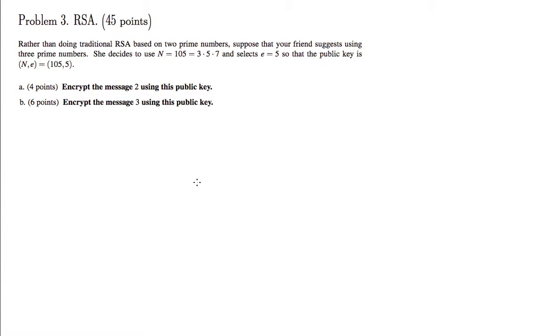The problem 3 parts a and b. In this problem we are given an RSA scheme but it is based on three primes this time: three, five, and seven. So the public key in RSA we know is the pair n and e. Here e is equal to five.